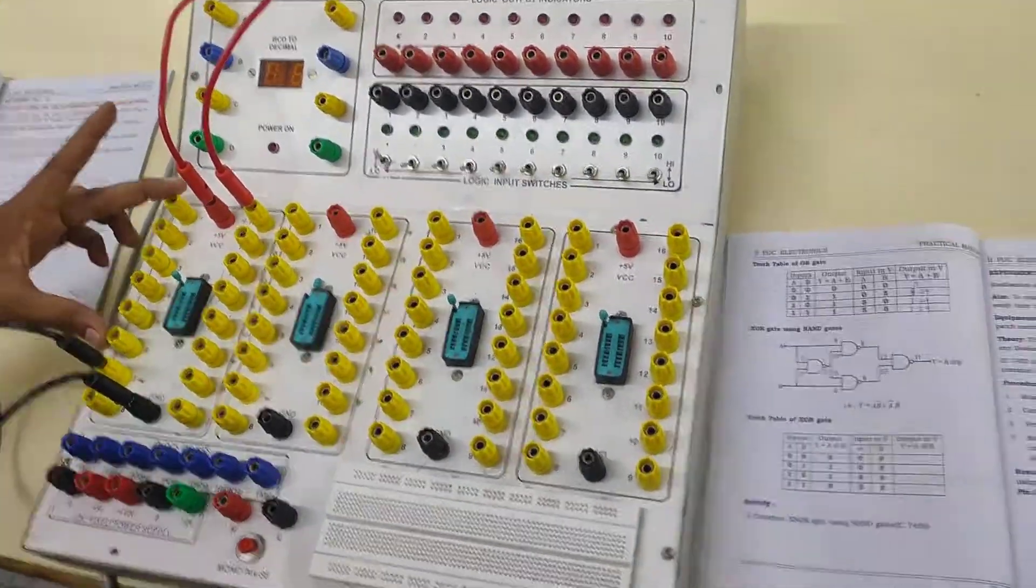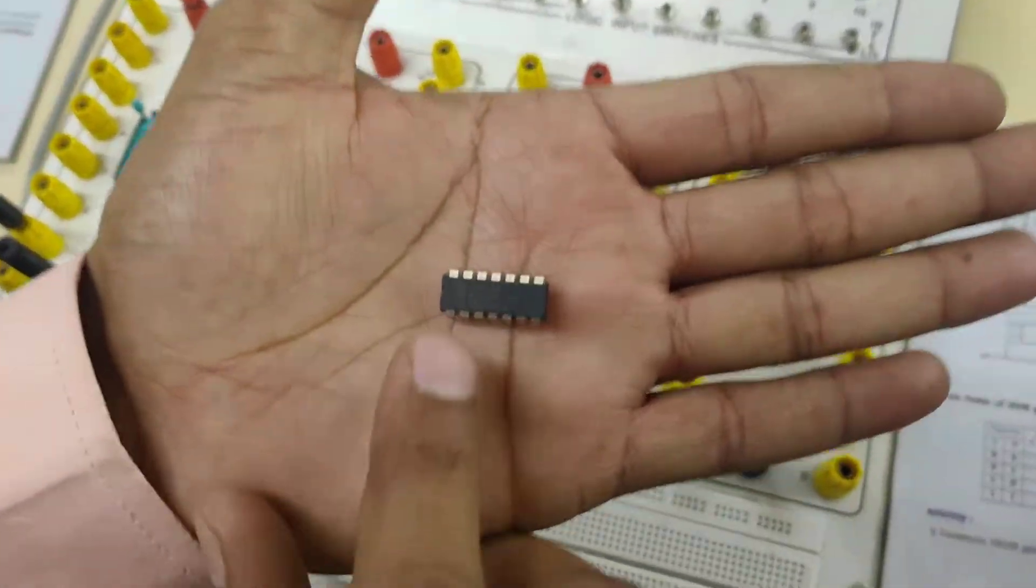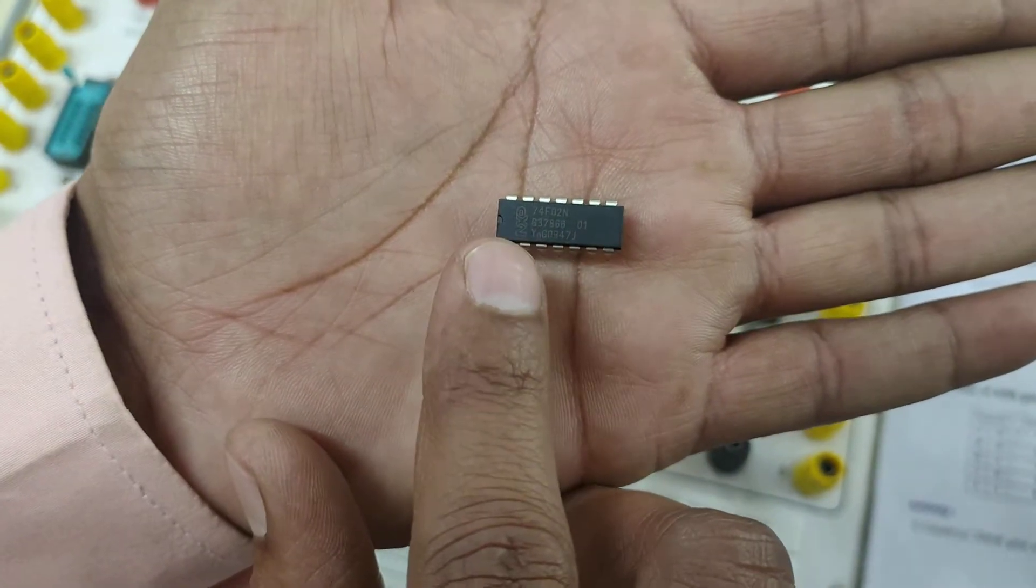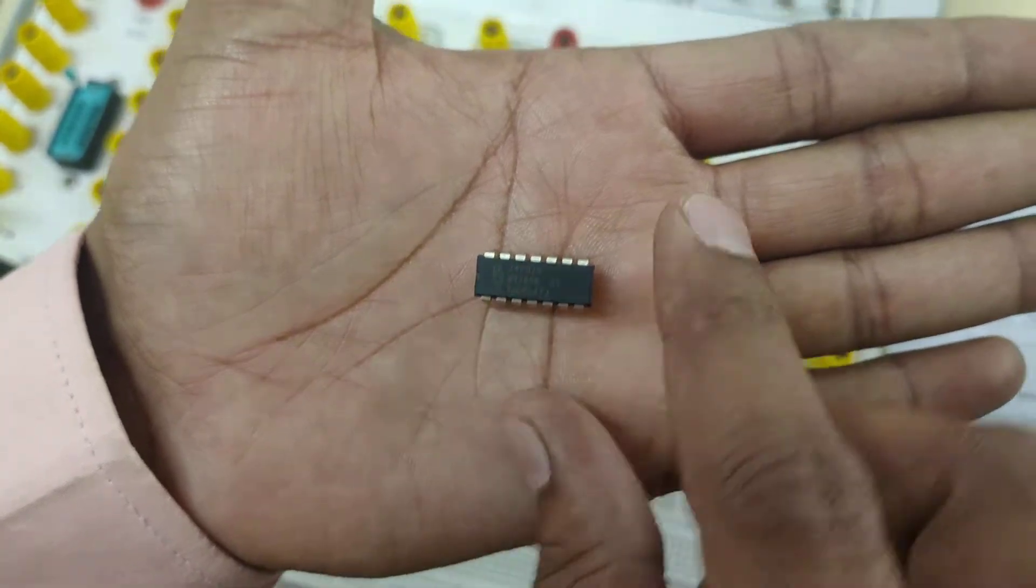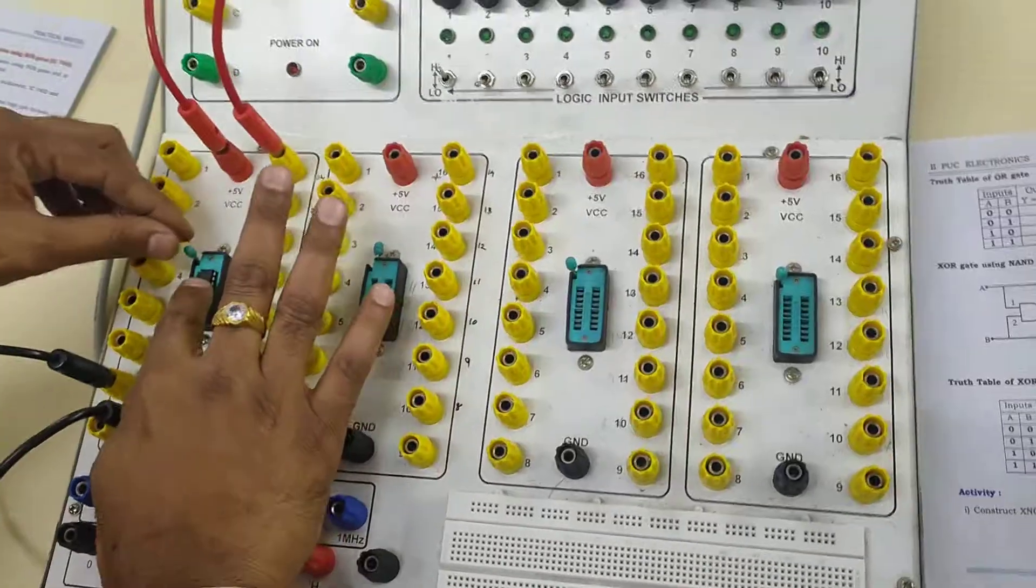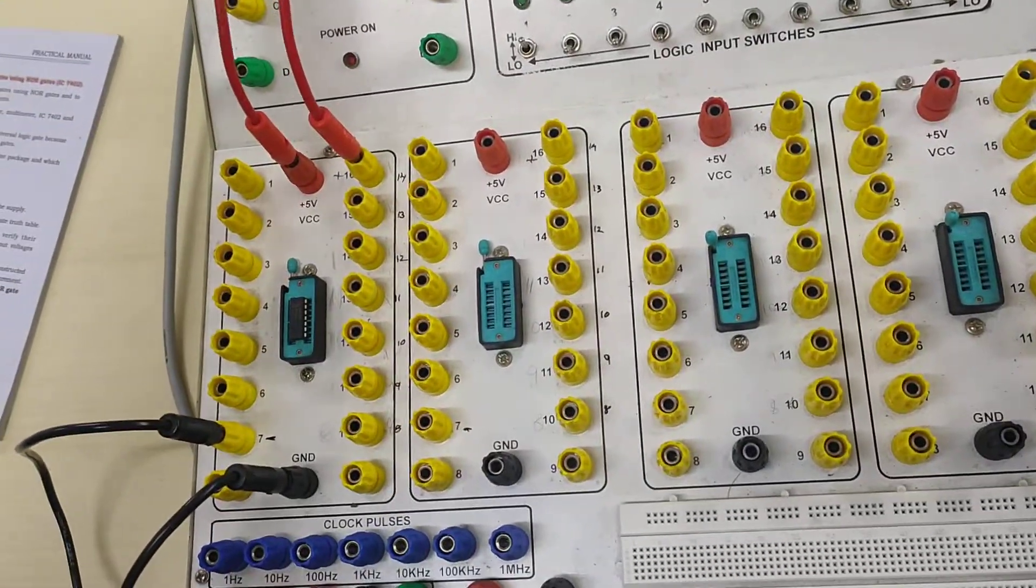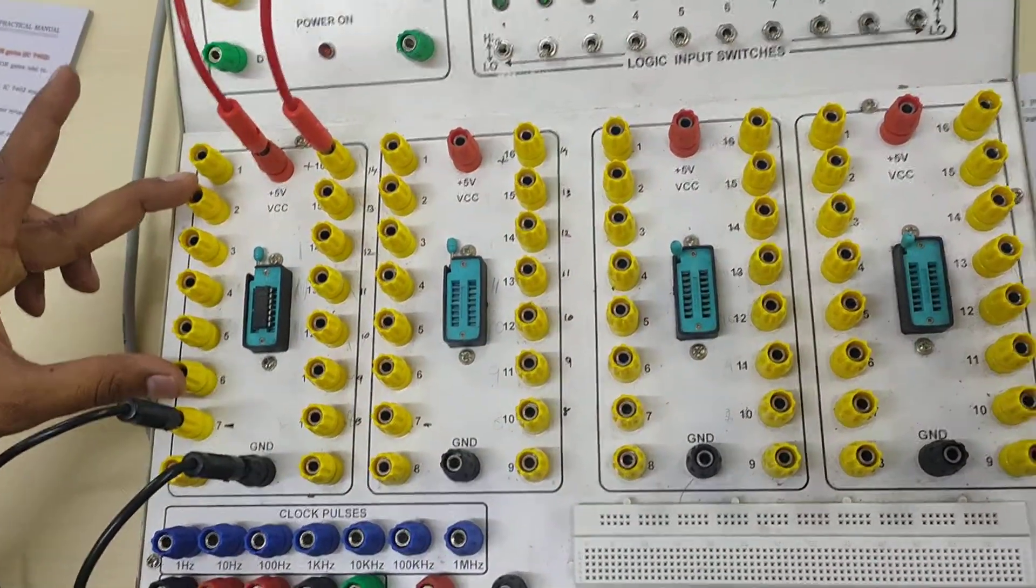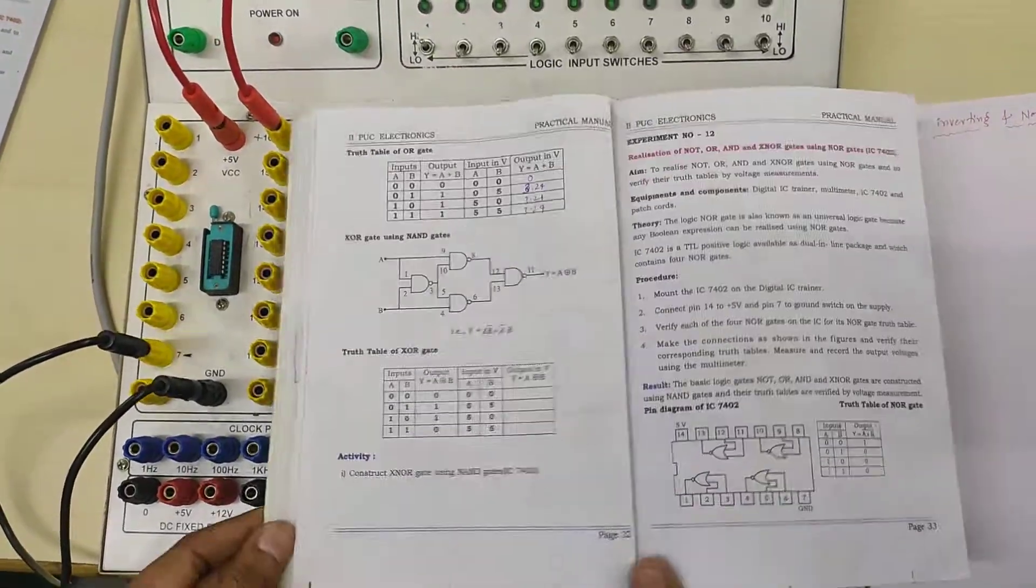Here we have 7402 IC. You please see that 7402 this IC. This is 7402, the NOR gate IC. Let me connect into the zip socket. Anyway, we know about it. Pin number 14 is always VCC, pin number 7 is ground and pin configuration of this IC we need to remember it is same like 7400.